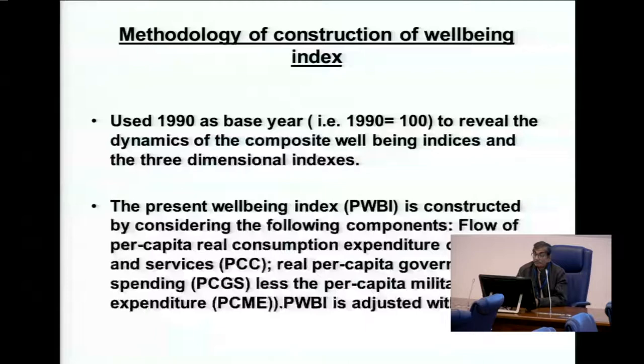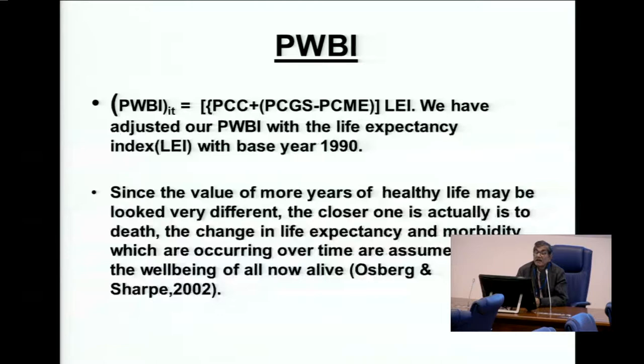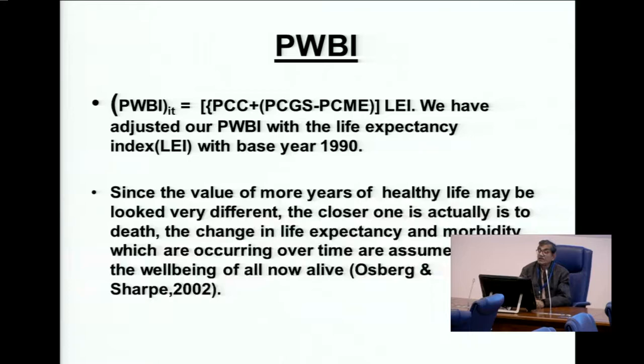Our present well-being index consists of the flow of real per capita consumption expenditure, the flow of per capita government spending less per capita military expenditure — since we have accounted for military expenditure in the social security index — and all of this is adjusted with the life expectancy index, because a healthier life has an effect on the well-being of all alive in a country. This method is also followed by Andrew.